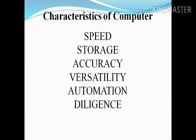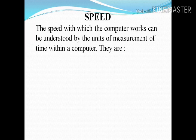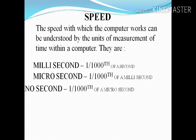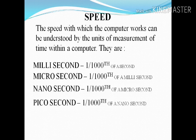The characteristics of a computer are: speed, storage, accuracy, versatility, automation, and diligence. These are the main characteristics. One by one we will discuss them. The speed of a computer can be measured in milliseconds, microseconds, nanoseconds, and picoseconds — it is very fast.